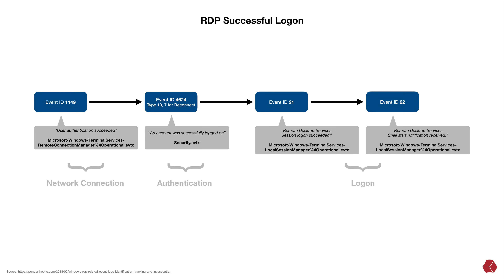We'll start with RDP's successful logon. There are four event IDs of particular interest, starting with event ID 1149, which has a description of 'User Authentication Succeeded.' This will be found in the Microsoft Windows Terminal Services Remote Connection Manager Operational log — I'll just call it the remote operational log. Next, we have the very familiar event ID 4624, with a logon type most commonly 10 for a remote desktop connection, but it could also be type 7 for a session reconnect. The description is 'An account was successfully logged on,' and this is found in the security log file.